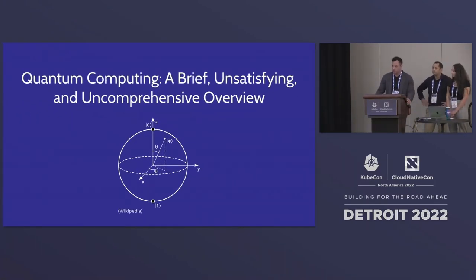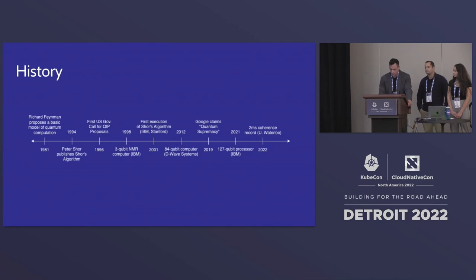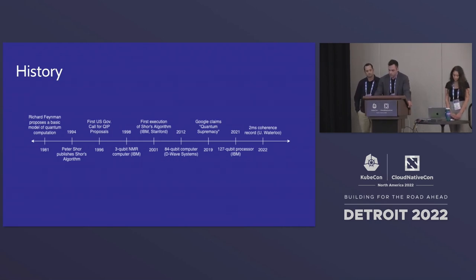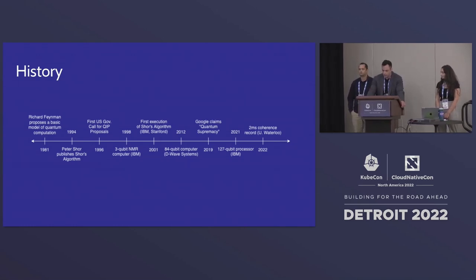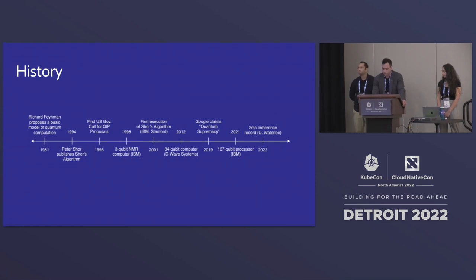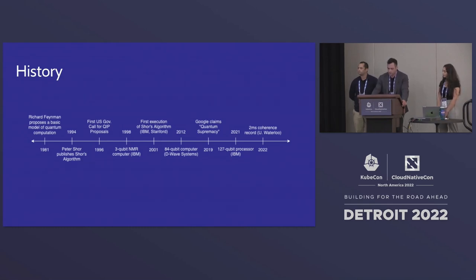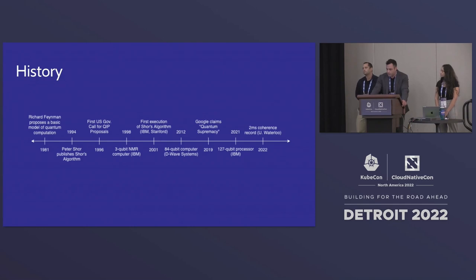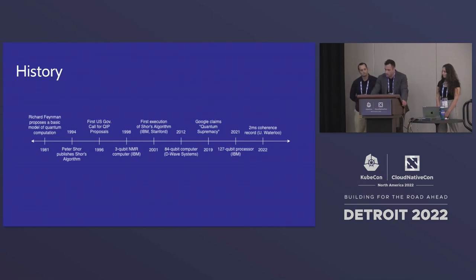Let's get a brief overview of quantum computing. Note the sphere on screen — it's called the Bloch sphere and will be relevant later. Starting from Feynman's 1981 paper, the first small-scale quantum computer was made in 1998 with three qubits. Over the next decade, starting with the first execution of Shor's algorithm in 2001, major hardware advancements were made. Most notably, in 2019 Google claimed quantum supremacy, performing a random circuit sampling computation in 200 milliseconds that a classical computer would take 10,000 years — though IBM disputes this, claiming it's closer to two and a half days.